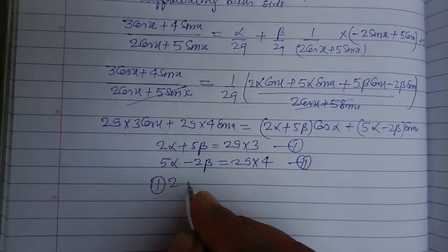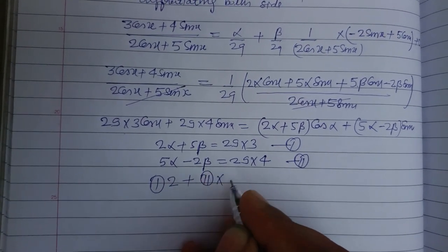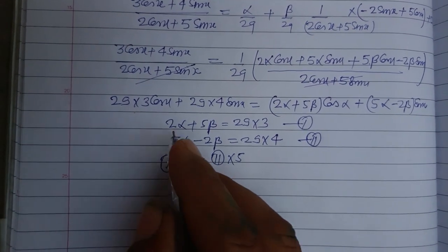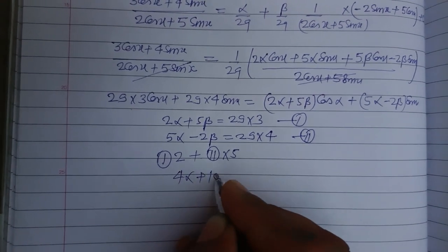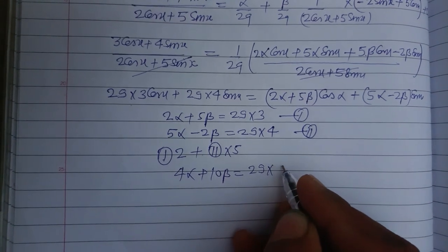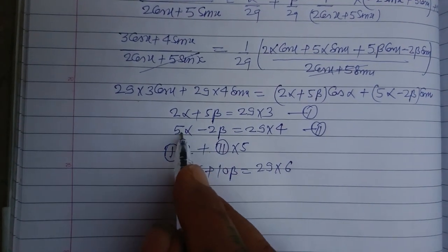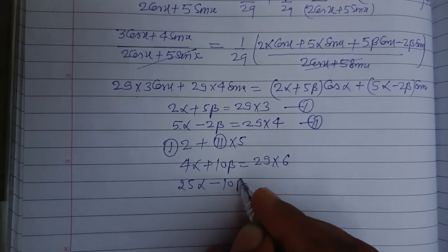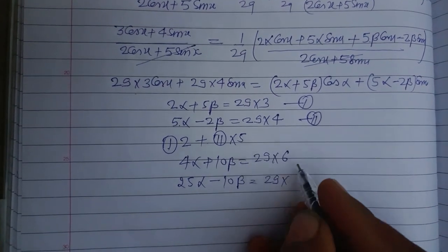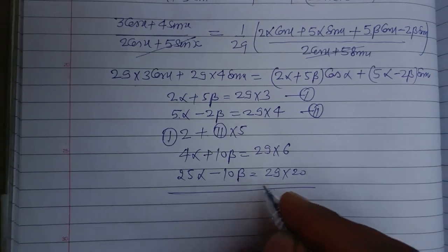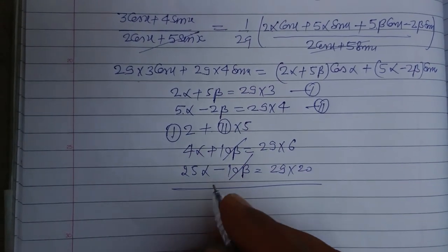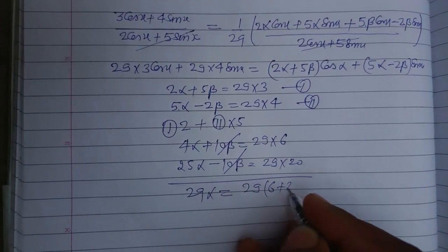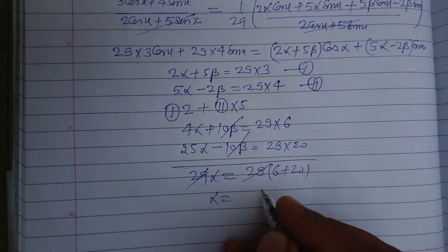To solve the system, multiply the first equation by 2 and the second equation by 5 to make the beta terms cancel. First into 2: 4 alpha + 10 beta = 29 times 6. Second into 5: 25 alpha minus 10 beta = 29 times 20. Adding these, the 10 beta terms cancel, giving 29 alpha = 29 times (6 + 20).